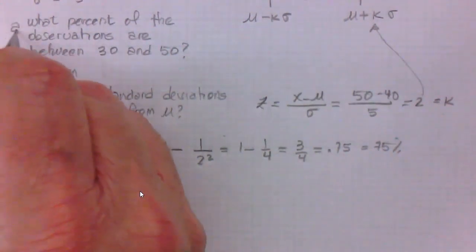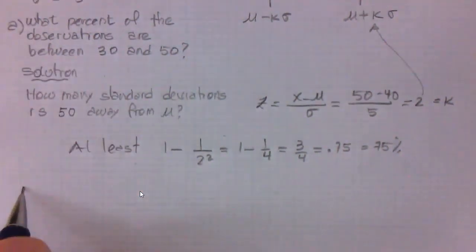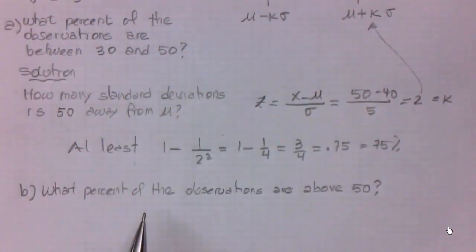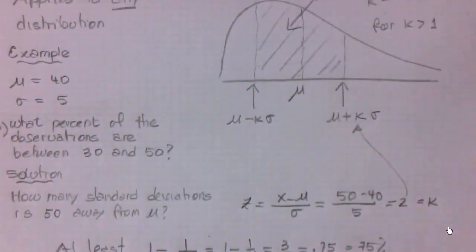Let's say that was part A of the question. A trickier question would be: what percent of the observations are above 50?